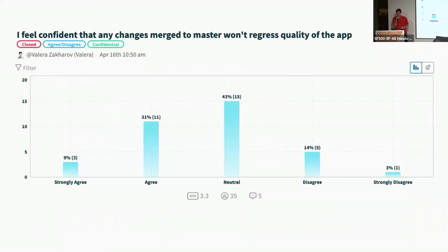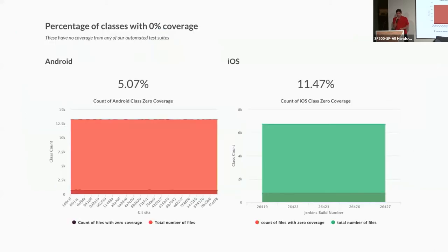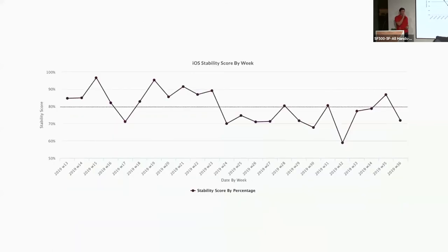Confidence about merging changes to master — this is the one area where we struggle. Most people are neutral. It could have something to do with this: we recently started measuring code coverage, specifically which classes are not covered by any automated tests. On Android it's about 5%, on iOS it's close to 11%. If there are whole classes in your code base that are not covered by any tests, frequently modified and super scary to refactor — that's a problem.